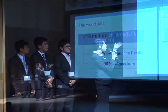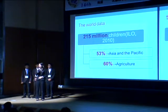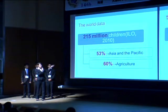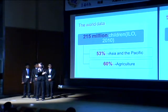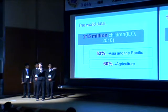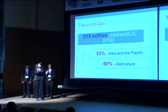Around the world, there are 215 million children — about one out of seven children — who are involved in child labor. Fifty-three percent of them live in Asian countries or the Pacific Islands. Sixty percent of them have worked in agriculture, such as cocoa, coffee, or banana plantations.